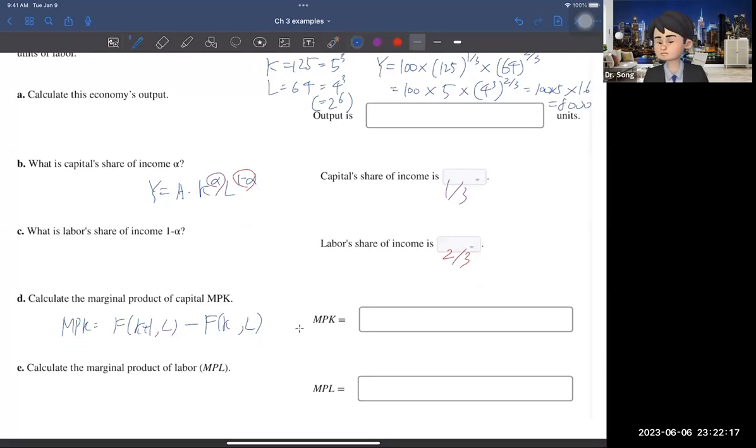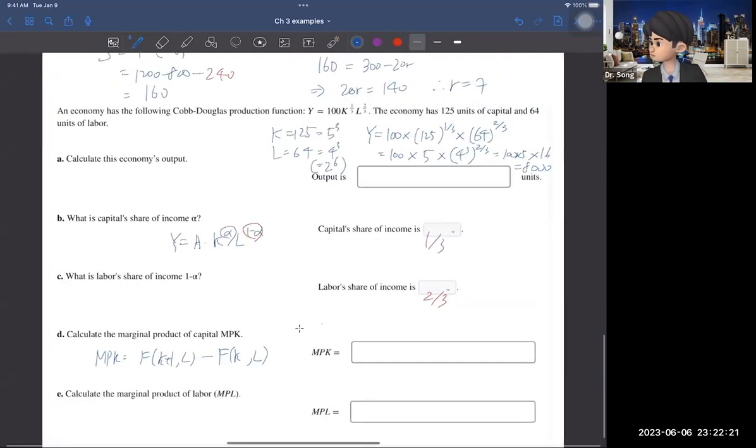So then, in order to find the answer, you need to find the output with K equals 126. So, you have one more capital, one more machine, and see what happens to the output. So, that being said, you calculate,